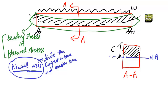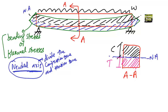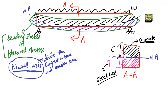The region below the neutral axis is in tension. We call this zone the tension zone. In the tension zone we have to provide steel reinforcement or steel bars in order to take the tensile stresses.